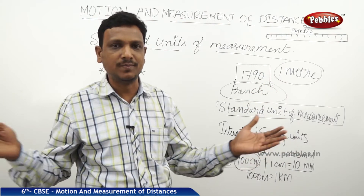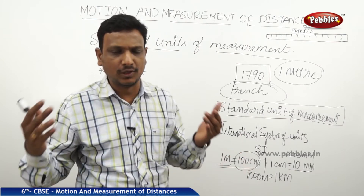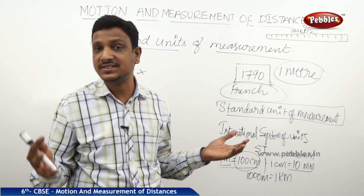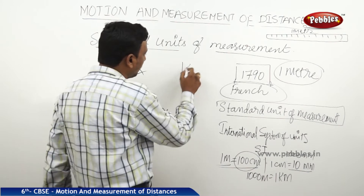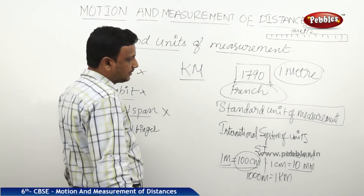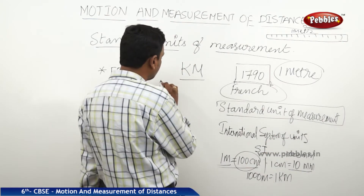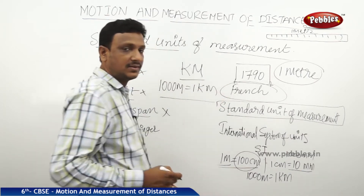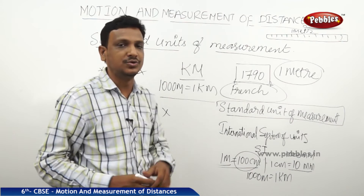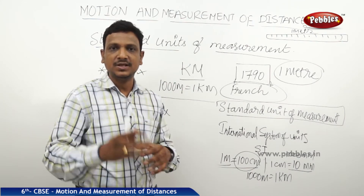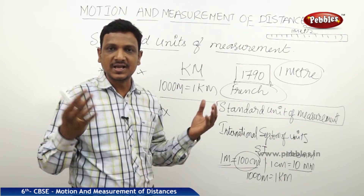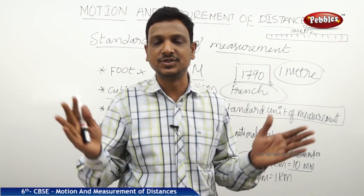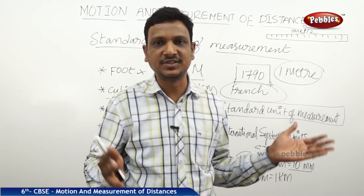For measuring smaller lengths we use meters, but for larger distances — like between Kerala and Delhi, which is 2600 kilometers — we use kilometers. One kilometer equals 1000 meters, making it the larger unit of length. Using hand span, cubit, foot, or other body parts to measure is not accurate because these vary from person to person, making them non-standard.